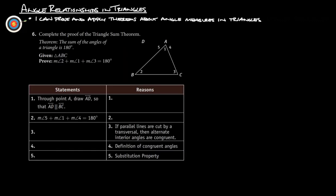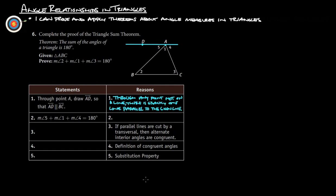Let's take a look at a couple of problems from our book. Complete the proof of the triangle sum theorem: the sum of the angles of a triangle is 180 degrees. Given that ABC is a triangle, prove that measure of angle 2 plus measure of angle 1 plus measure of angle 3 equals 180 degrees. First, through point A, we draw AD so that AD is parallel to BC — we can do that because through any point not on a line, there is exactly one line parallel to that given line.